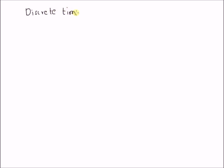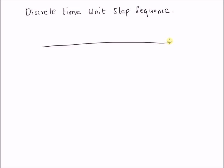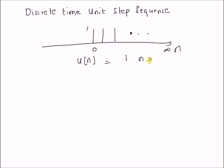We will also look at a brief analysis of the interrelationship between the unit step sequence and the unit sample. The discrete time unit step sequence has values of one at all values of n from zero to infinity. It is denoted by u(n) and mathematically defined as u(n) = 1 for n ≥ 0, and 0 for n < 0.